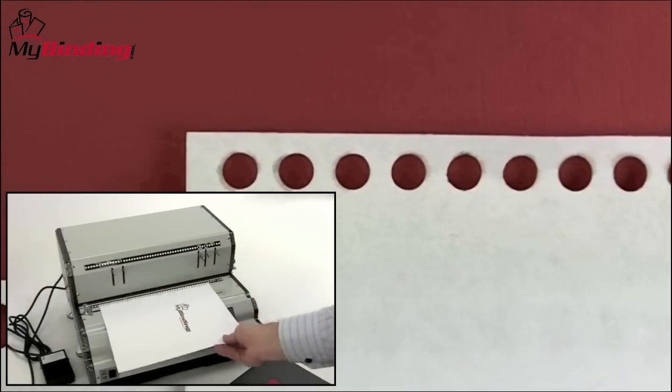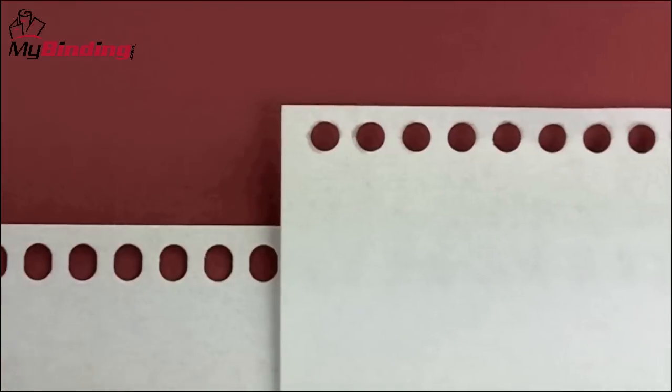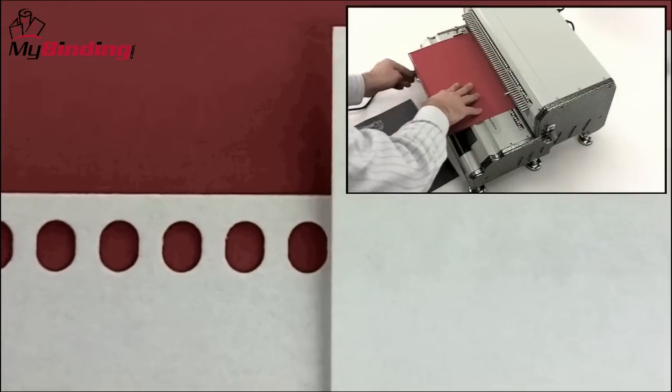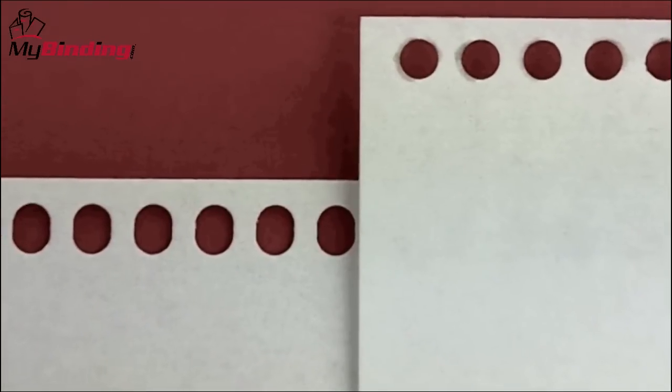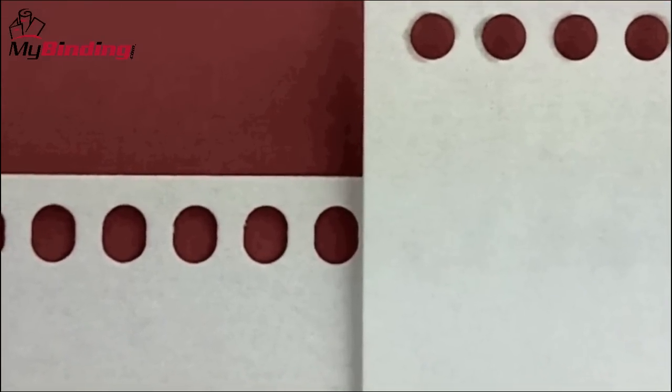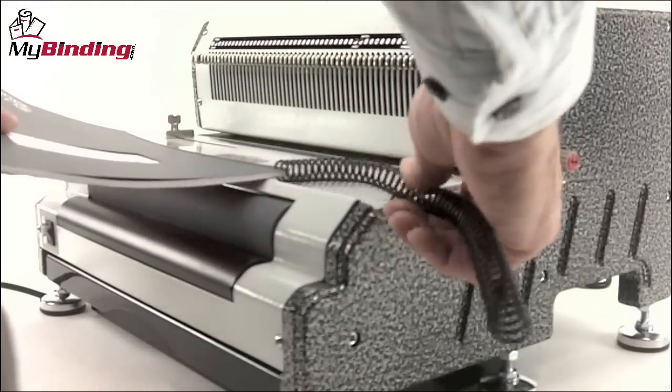The EPI cuts round holes that are four millimeters wide. The Plus model punches oval holes. The difference is oval holes work better with larger or thicker documents. Also, oval holes are easier to begin the threading process of the coil onto the spine.